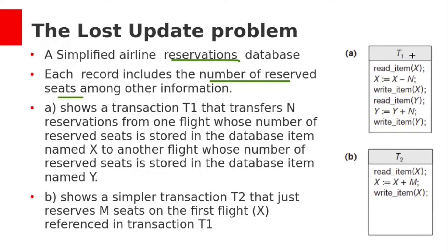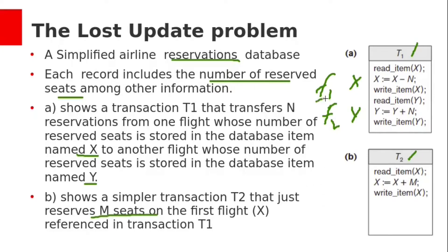Here we are taking two transactions, T1 and T2. Transaction T1 transfers reservations from one flight whose number of reserved seats are stored in data item X, to another flight whose number of reserved seats are stored in data item Y. We have two flights: flight F1 with reservations stored in data item X, and flight F2 with reservations stored in Y. Transaction T2 just reserves M seats on flight F1.